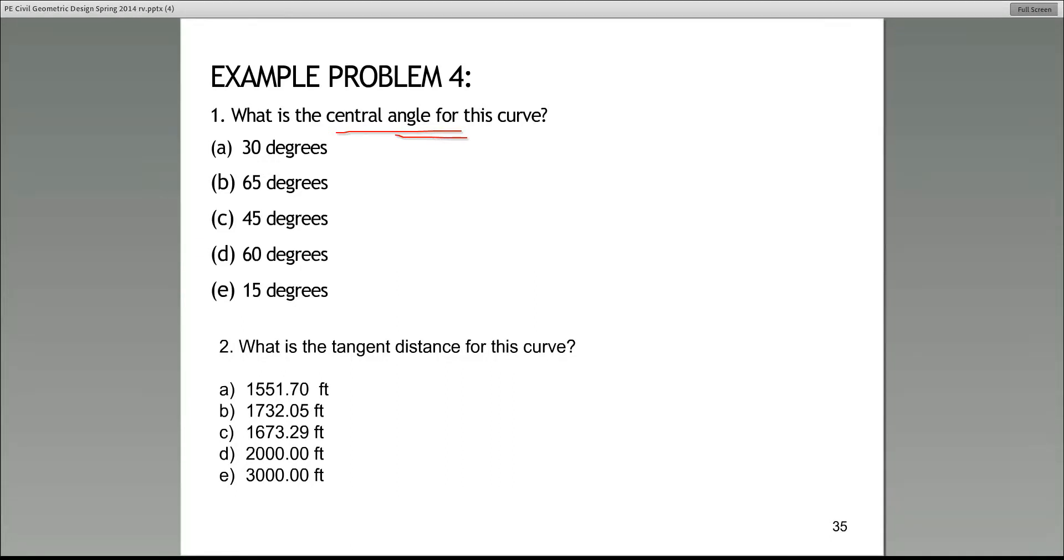I'm already getting some answers here. Those of you who are answering, you're saying either 60 or D, and you're correct. Here it is. The central angle is 60 degrees, and really all you have to do is find the angle of intersection, and it's 60 degrees.